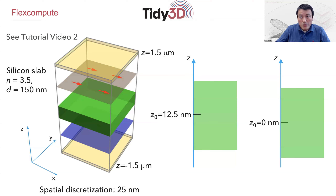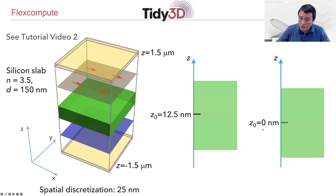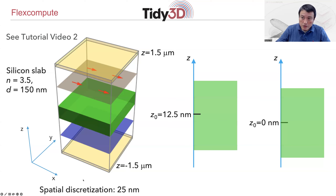I'm going to show you two examples of this simulation in which the only difference is that we choose the center of the dielectric slab to be different. In one case, with respect to this coordinate system, we choose the center to be at 0 nanometer. And in the other case, we choose the center to be 12.5 nanometer. In this simulation setup, we have chosen the spatial discretization along the Z direction to be 25 nanometer. Therefore, these two choices of the center of the slab differ by half the spatial discretization.